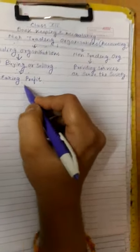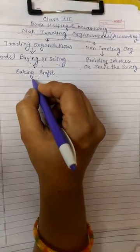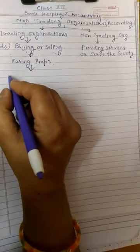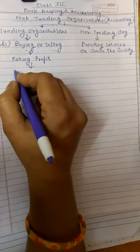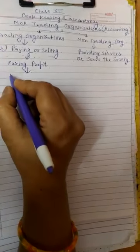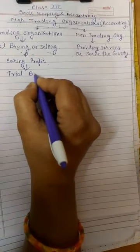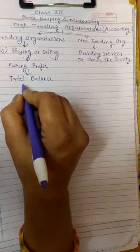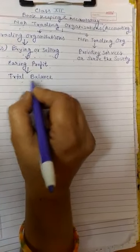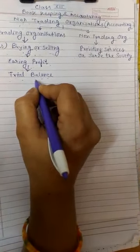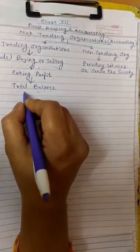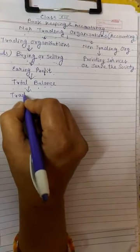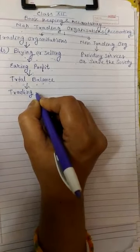But how they can prepare their account? The trading organization prepare their account by generally double entry system which finally ends in preparing trial balance. These organizations generally keep their account by mercantile system and they prepare trial balance at the end of the year on a fixed date and then after they prepare trading and profit and loss account.